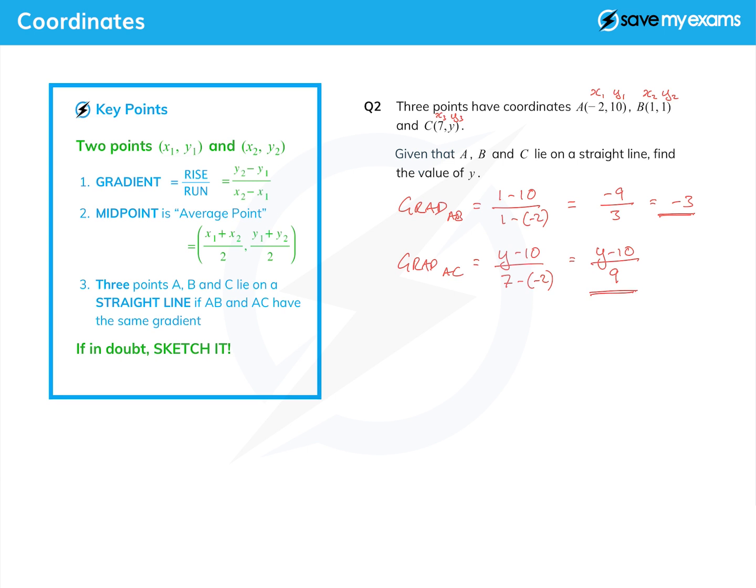Now as I say, we're told that they lie on a straight line, so let's write down what we're going to use. Straight line, so the gradient of AC equals the gradient of AB, and that gives me (y minus 10) over 9 is equal to -3.